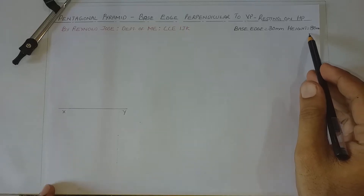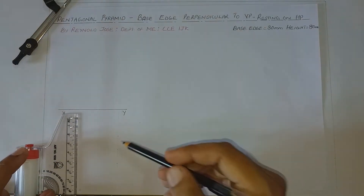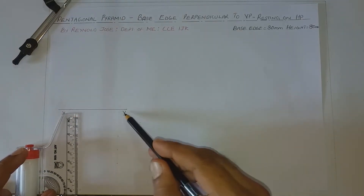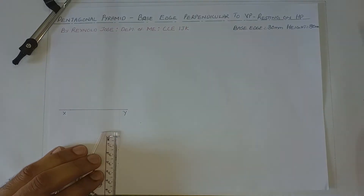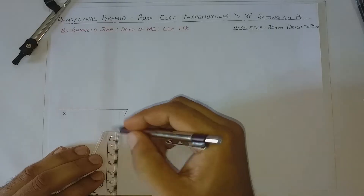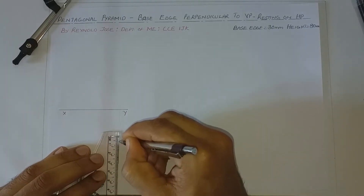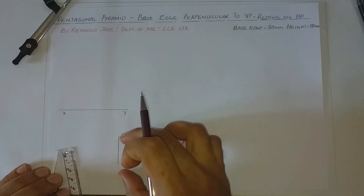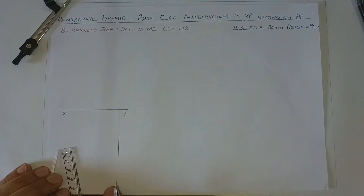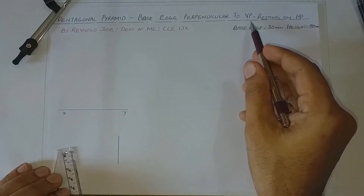We shall start from the right hand side. Base edge length is 30 mm. We shall draw a base edge or a line which is perpendicular to the XY line, so the length of the line is 30 mm. I am drawing this line because perpendicular to the XY line in the top view means the base edge will be perpendicular to VP.